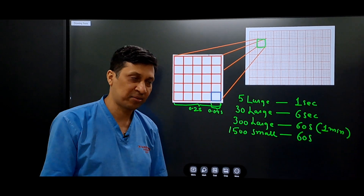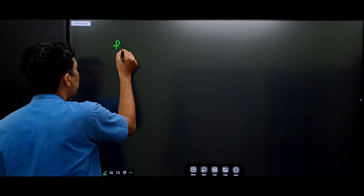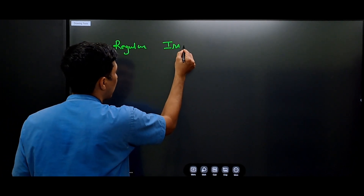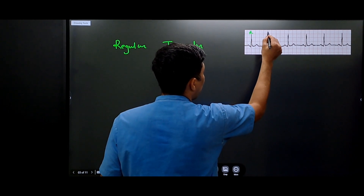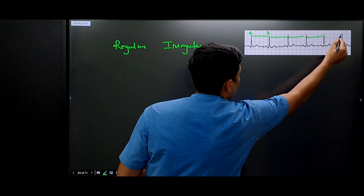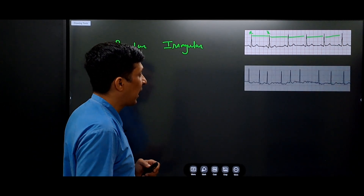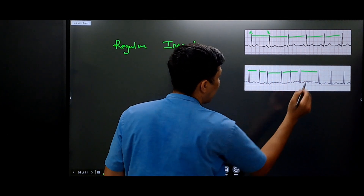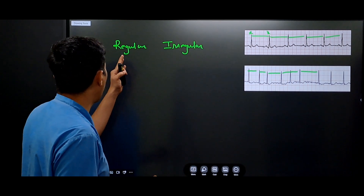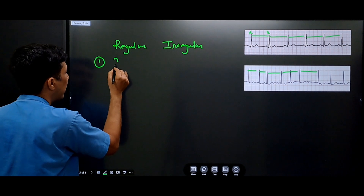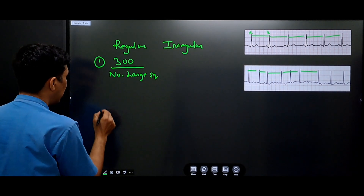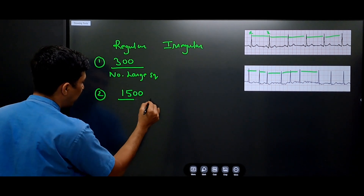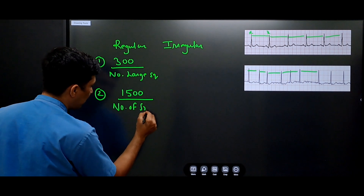When calculating heart rate on an ECG, we first determine whether the rhythm is regular or irregular. When the RR interval is constant, the rhythm is said to be regular. When the RR interval is continuously changing, that is called an irregular rhythm. When the rhythm is regular, the formula for calculating heart rate is 300 divided by the number of large squares. There is also another formula: 1500 divided by the number of small squares.